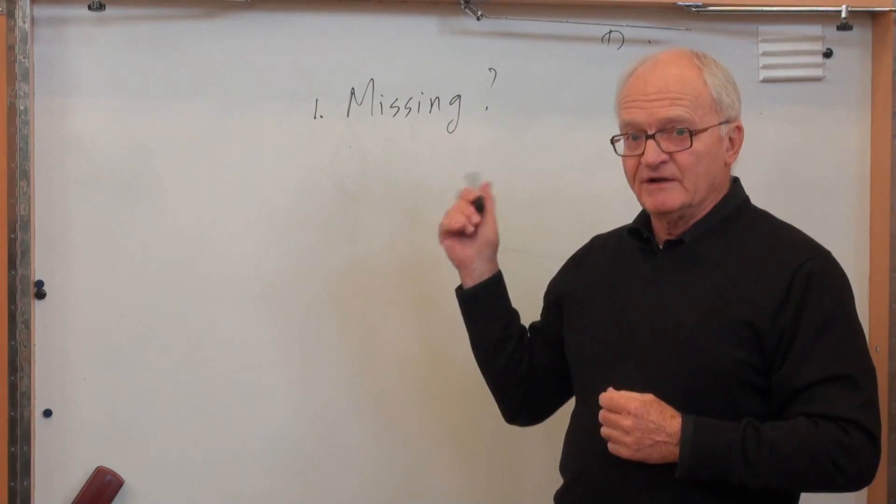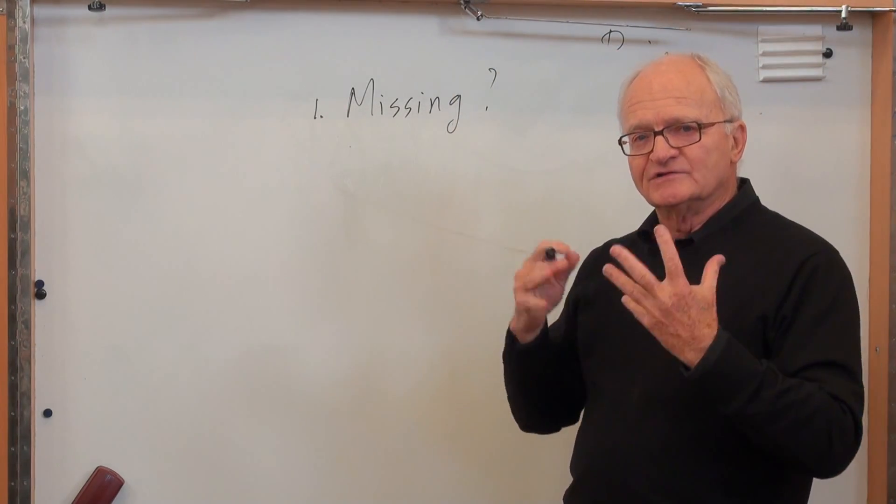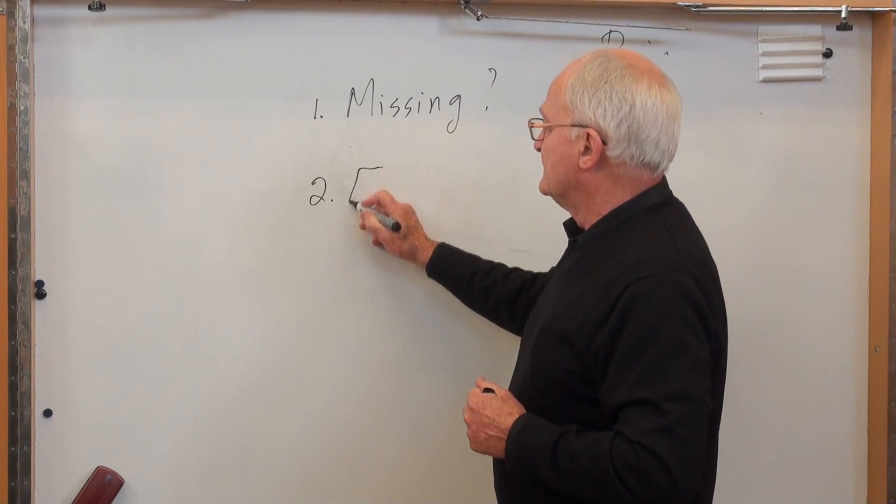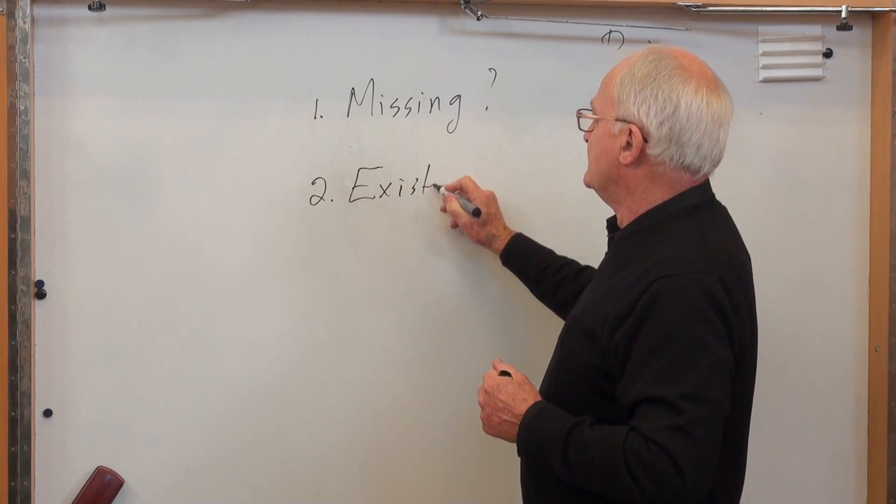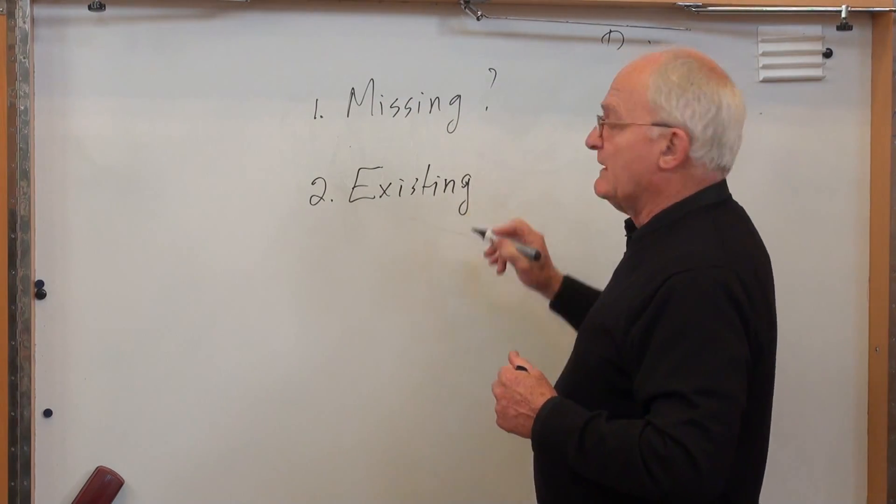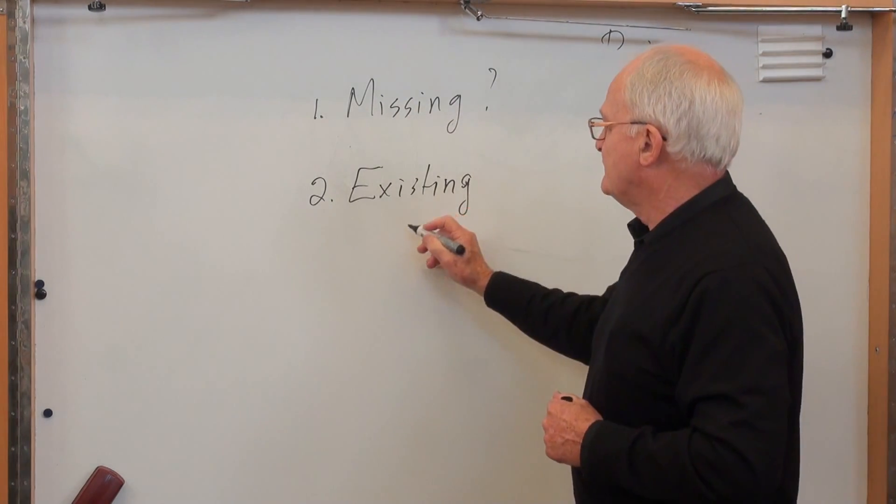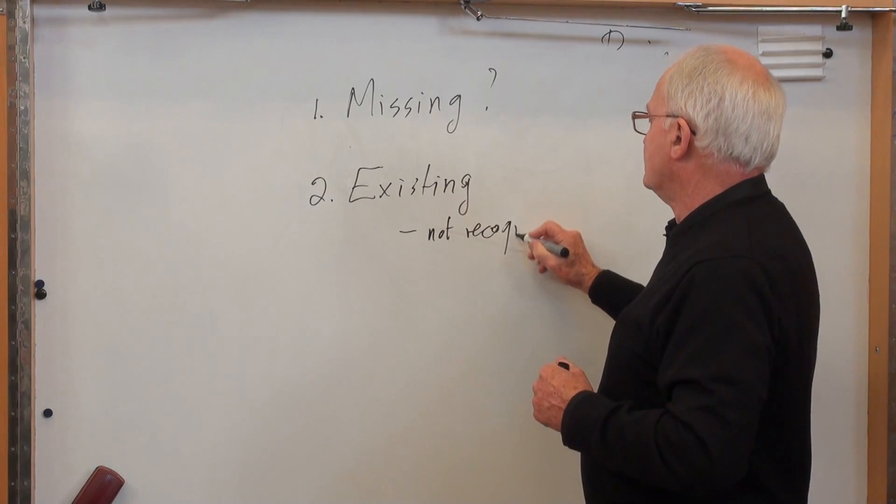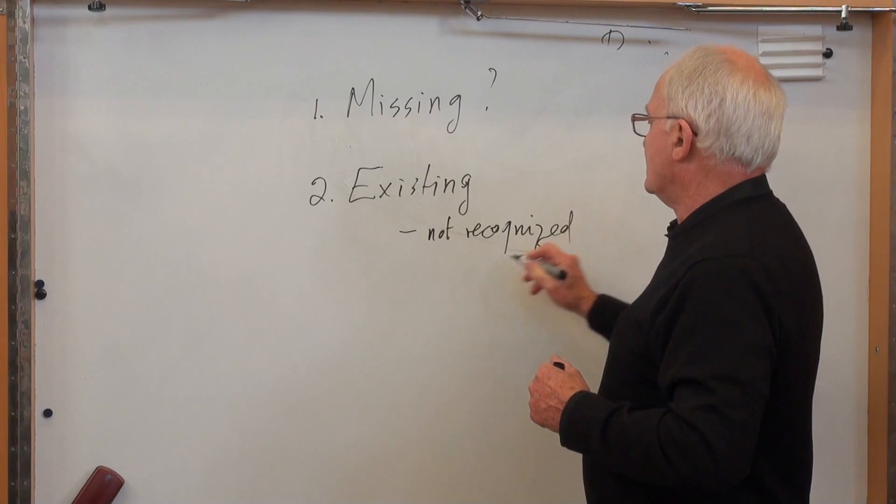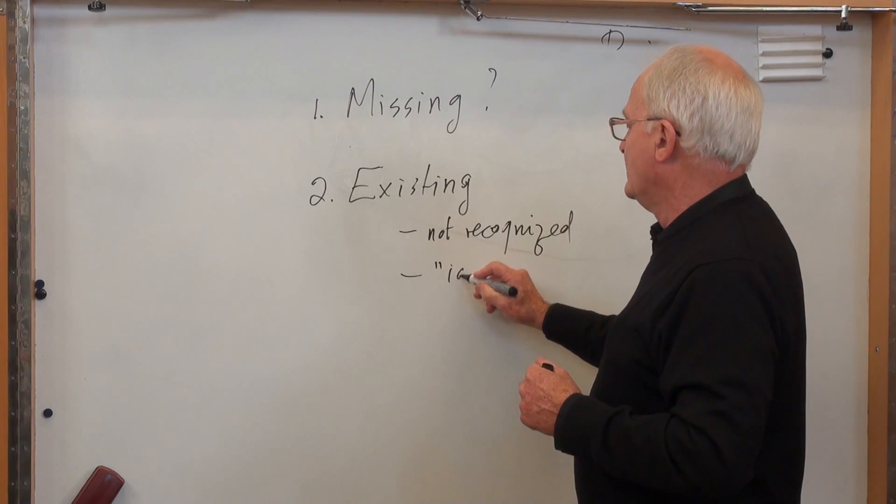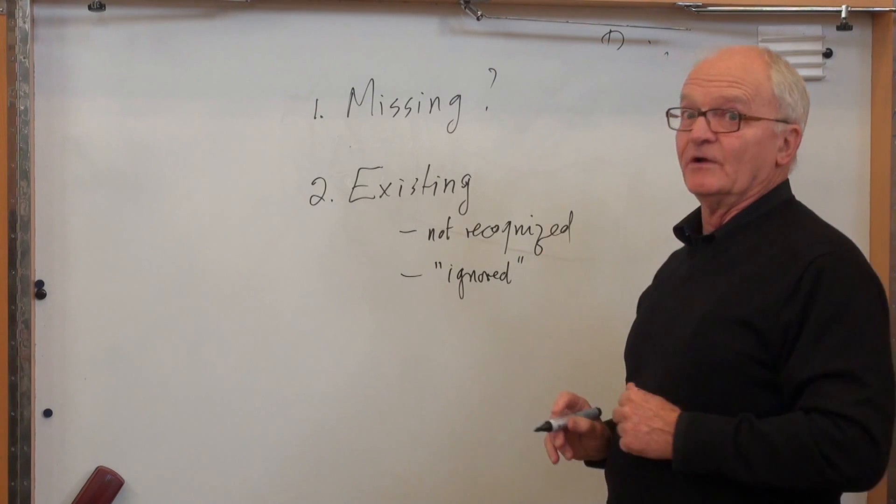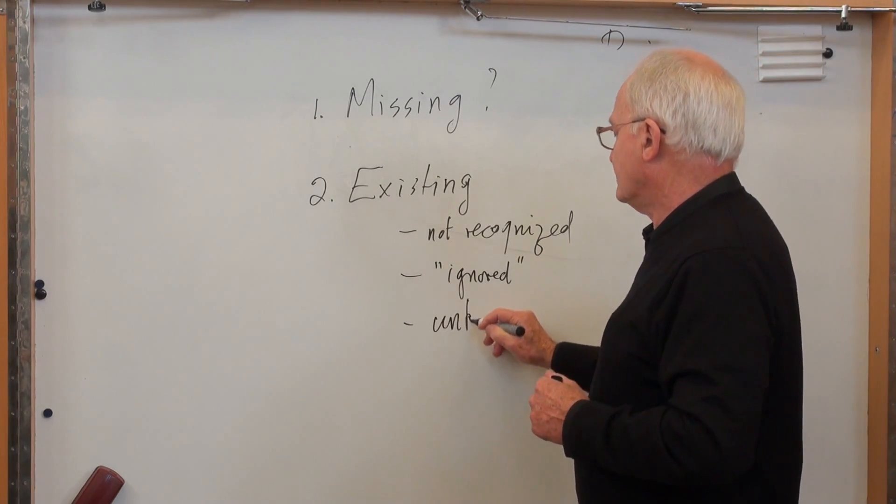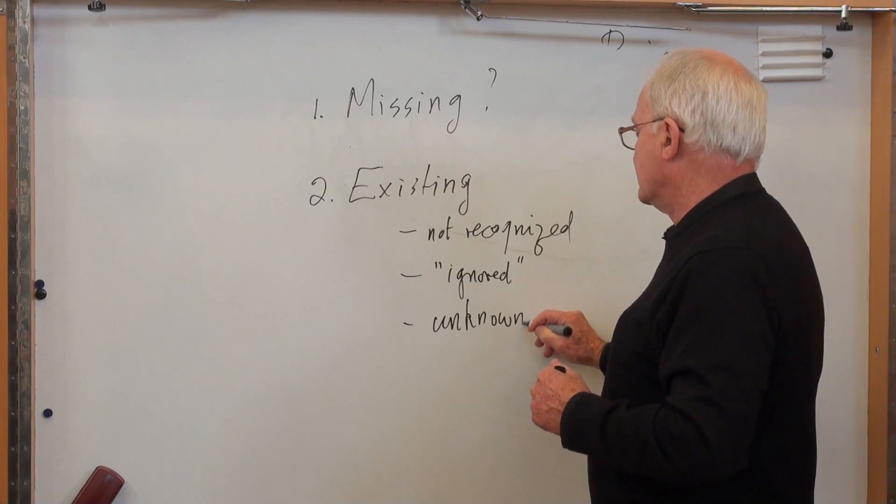That's an obvious one, but there's a lot of others that we need to think about in social ecological systems. The second category would be existing feedbacks. They're there, but some of them are not recognized. Some of them are just ignored because they're too costly and people don't want to know about them. And some of them are simply unknown and we have to discover and try and find them.